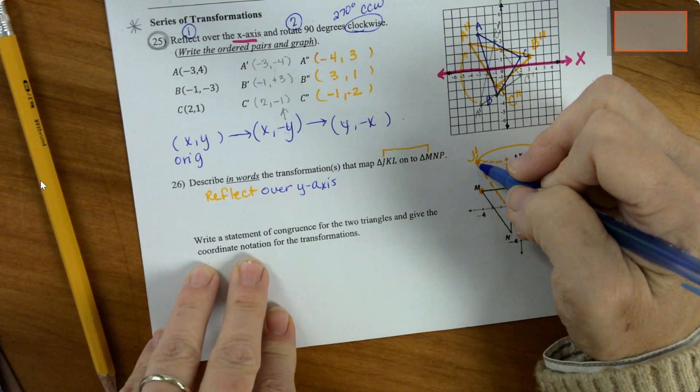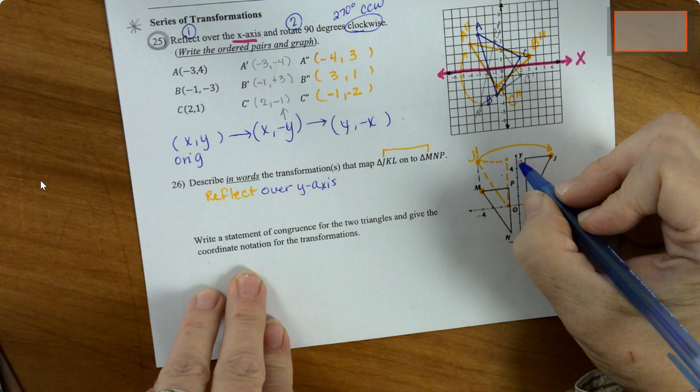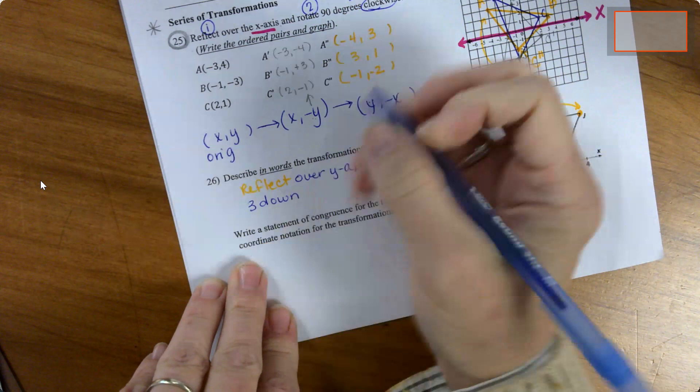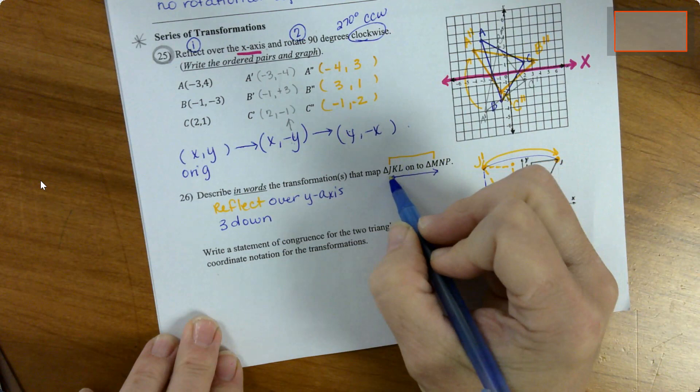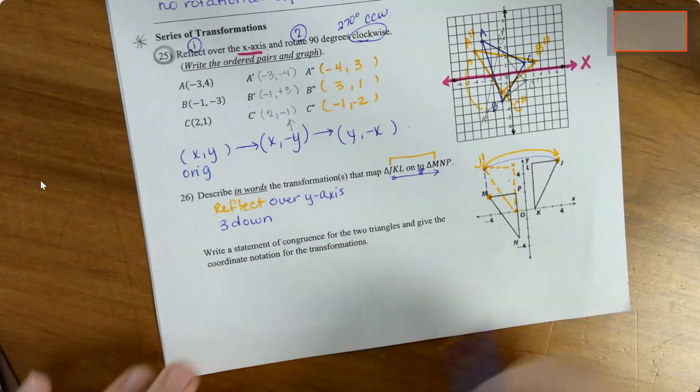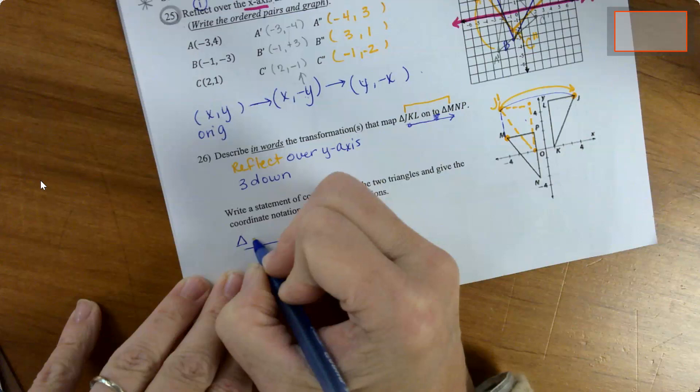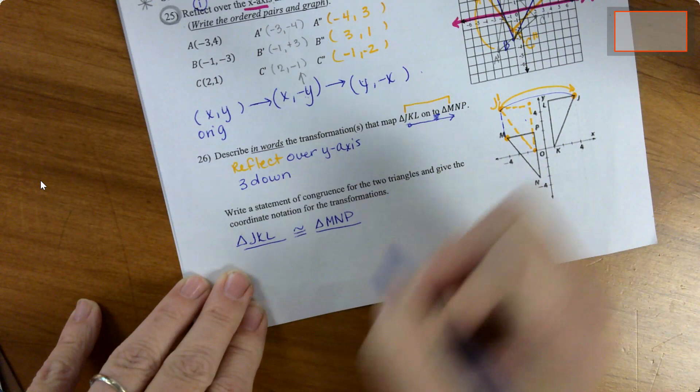So that's what's happening to go from here to here and then three down. Then, oh by the way, notice it said JKL to MNP. That's how I know not to go from here to here. Statement of congruence, that's pretty easy. I've got triangle JKL and triangle MNP, those are congruent. And then the coordinate notation, original. The reflection across the y-axis, so opposite x, y. And then three down, so x and y minus three. So that's what that looks like.